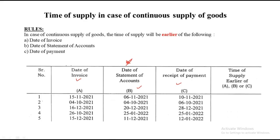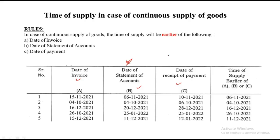Working through the examples: 15th November, 6th November, and 10th November — the earliest is 6th November. Next: 4th October, 4th October, and 6th October — 4th October is the earliest. Next: 16th December, 12th December, and 28th December — 12th December is the earliest. Next: 26th October 2022, 25th January 2021, and 25th January 2021 — 2021 is earlier, so 25th January 2021. Last: 15th December, 11th December, and 12th January 2022 — comparing December dates, 11th December is the time of supply.